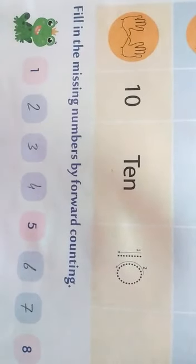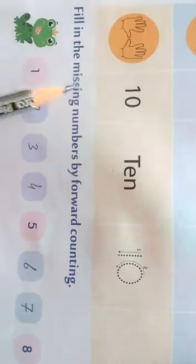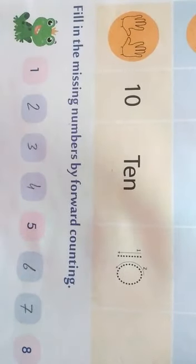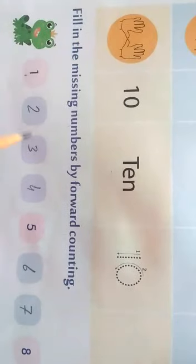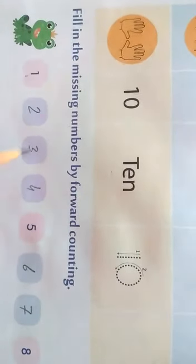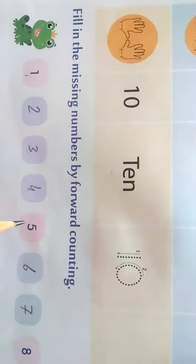Our next question is: fill the missing number by forward counting. You have to fill the missing number by forward counting. Forward counting means counting in the forward direction. One is given to you, then 2-3-4-5-6-7-8-9-10.